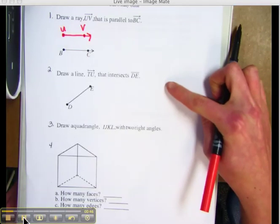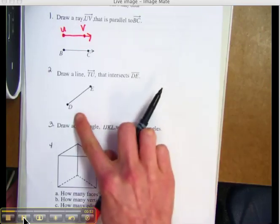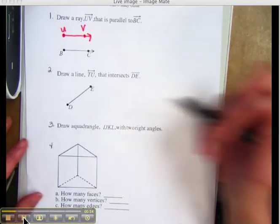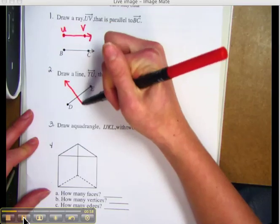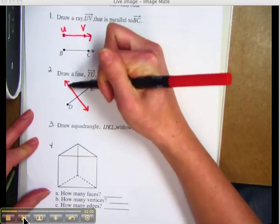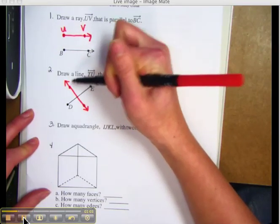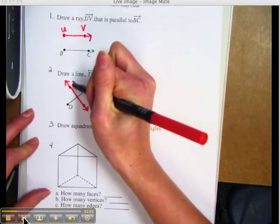Let's move on to number 2. Draw a line, line TU, that intersects line segment DE. I'm going to draw my line. Remember a line has two arrows on each end. I'm going to draw my points and label it TU.